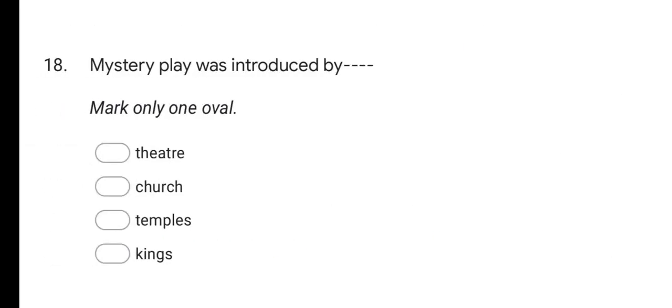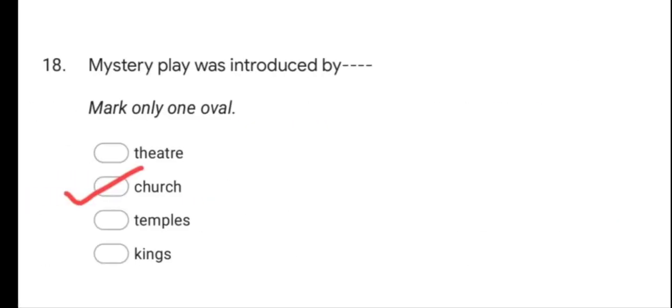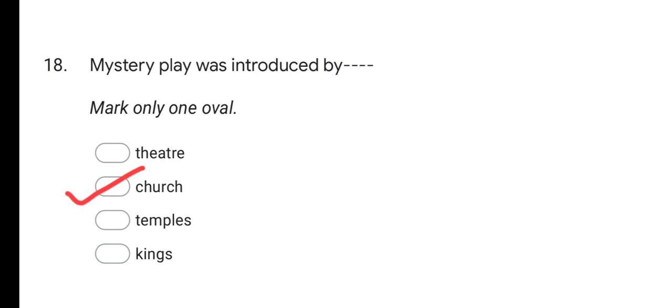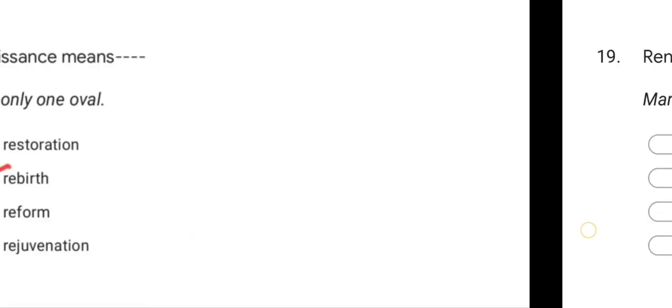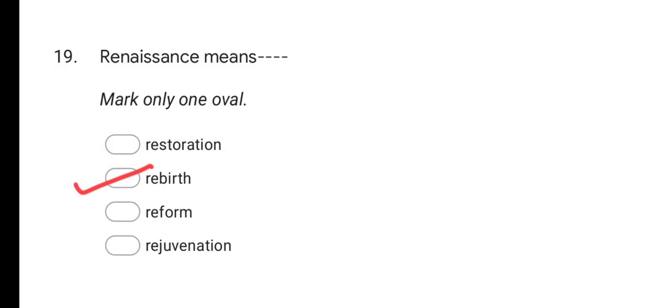Next question: Mystery play was introduced by? Options are: theatre, church, temples, and kings. Mystery plays were introduced in the church. Next question: Renaissance means? Options are: restoration, rebirth, reform, and rejuvenation. The correct answer is rebirth.